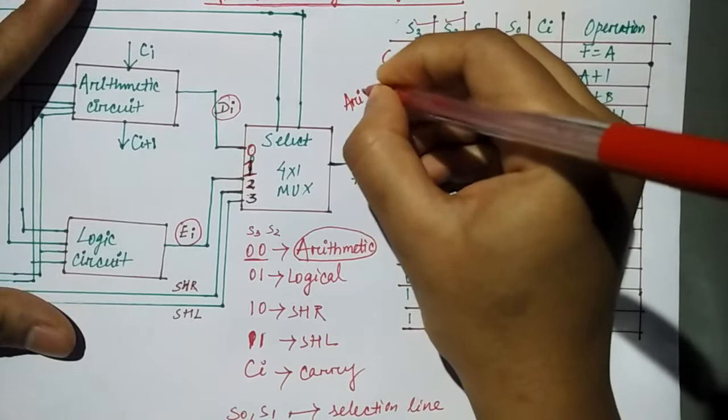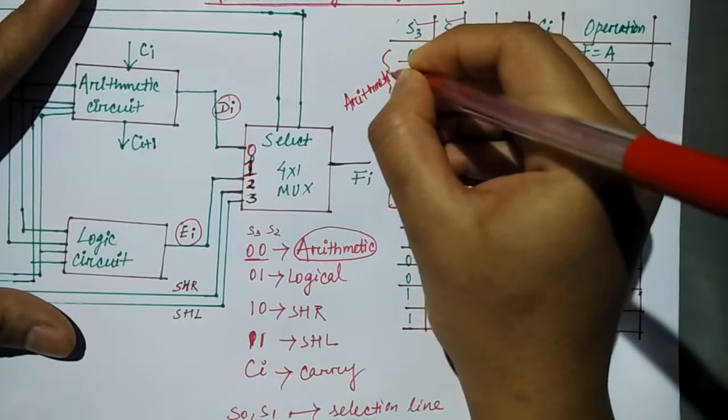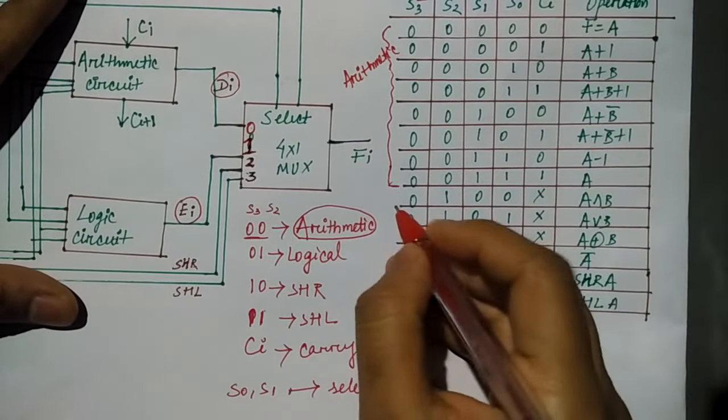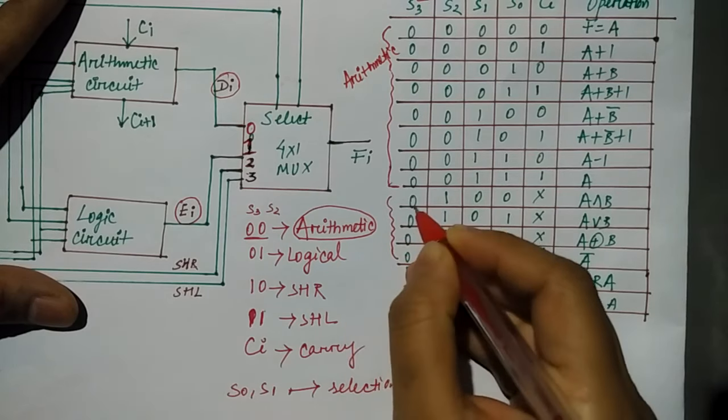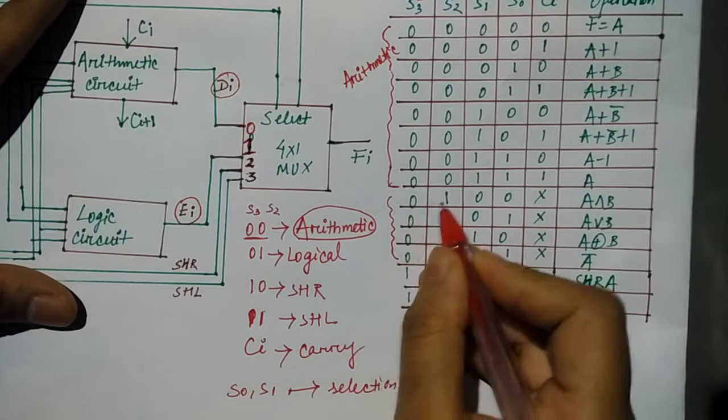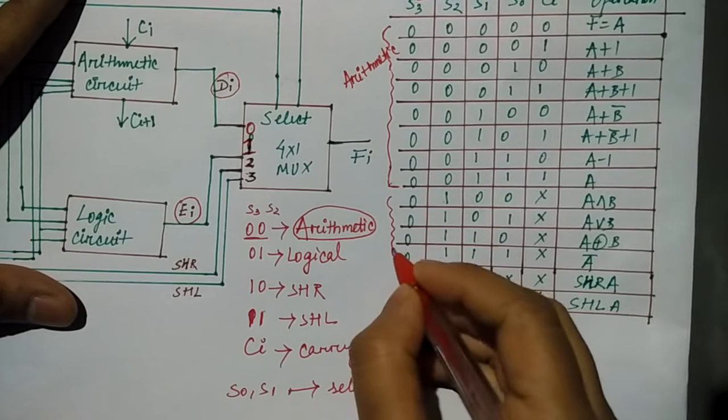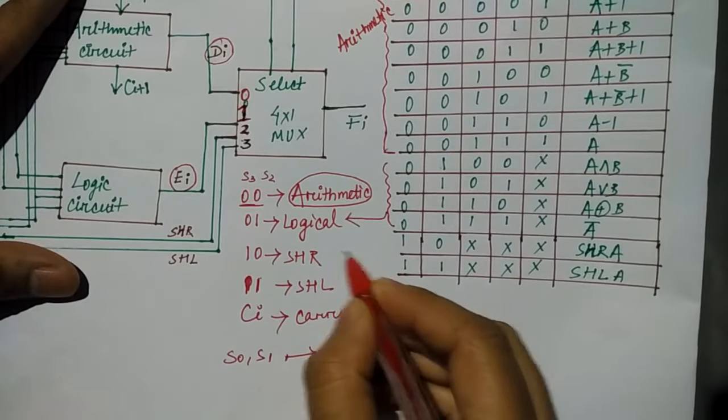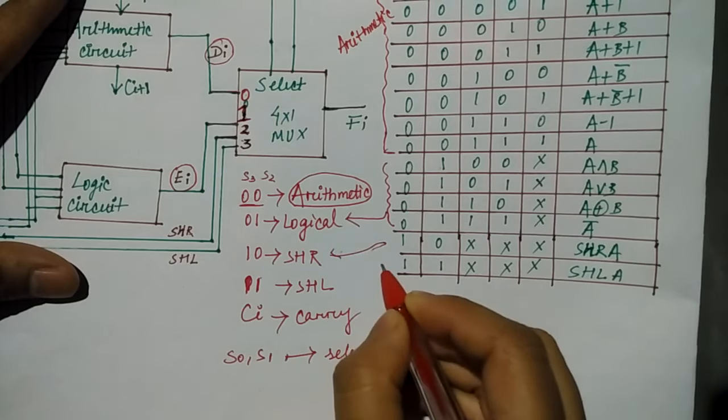So here what is the arithmetic operation for 8 values? Then, 0,1 is for logical. How do you understand? These four values, you can see S3, S2 are 0,1. Then this is logical operation. Last is for shift right and last is for shift left.